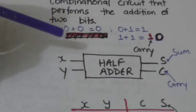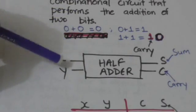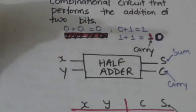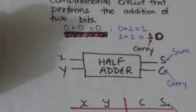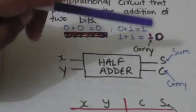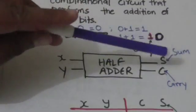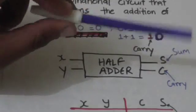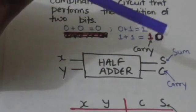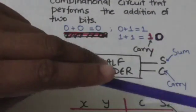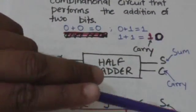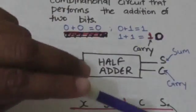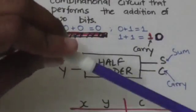In the half adder we have two input variables X and Y, which represent the bits to be added, and two output variables S and C. S is the symbol for sum and C is the symbol for carry. S represents the least significant bit of the sum of X and Y.